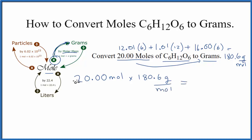When we do this, we multiply the top, divide by the bottom. Moles is going to cancel out. So we'll take 20.00 times 180.6 grams. We'll end up with 3612.00, and because the moles have canceled out, our units are grams.